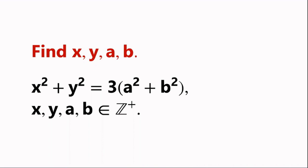Find x, y, a, b. x squared plus y squared equals 3 times a squared plus b squared, where x, y, a,